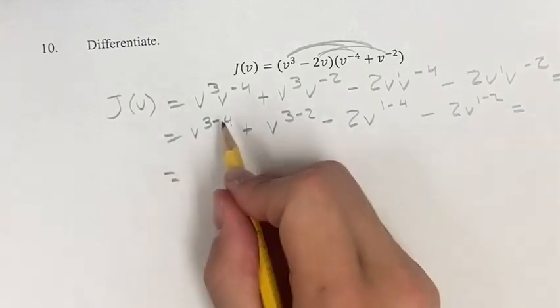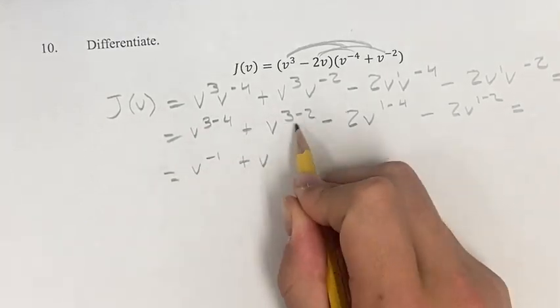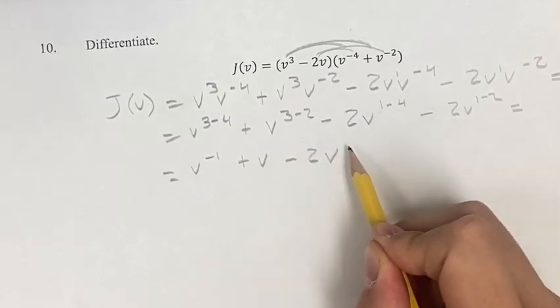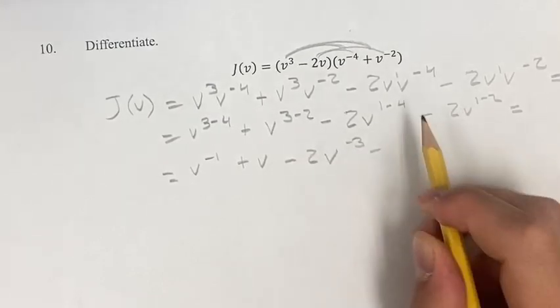This is equal to v to the negative 1 plus v to the 1, which is just v minus 2v to the negative 3 minus 2v to the negative 1.